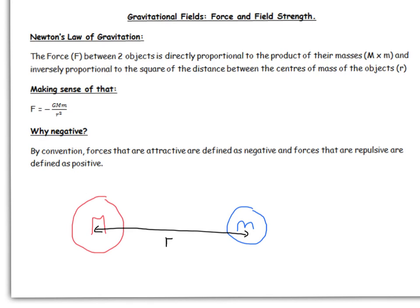So first off, Newton's law of gravitation. He proposed this law that the force between two objects is directly proportional to the product of their masses, M and m, and inversely proportional to the square of the distance between the centres of mass.